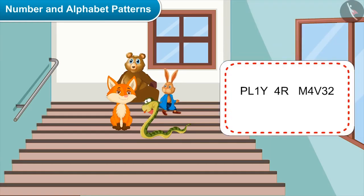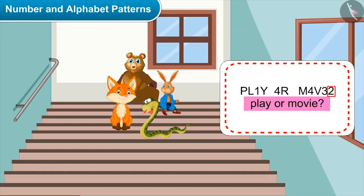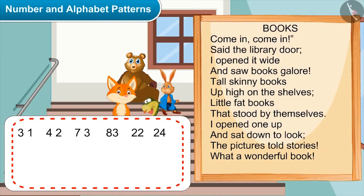Here is my message — play or movie? We have converted 1 into A, 4 into O, 3 into I, and 2 into E. So now we can text each other by using this code.